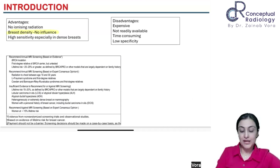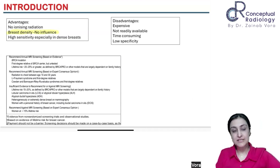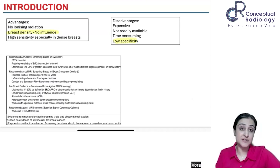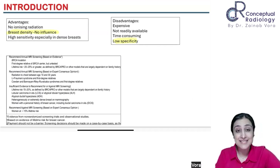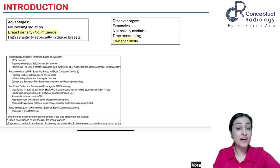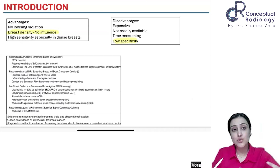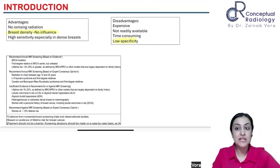The disadvantages are that you don't do breast MRI very readily — it is expensive. Most importantly, the specificity is low. Breast MRI has a very high sensitivity, which made it very attractive initially, but then people found it is not as specific as we want. We are picking up a lot of things but don't know what to do with all of them.